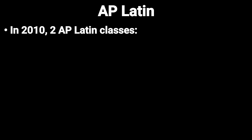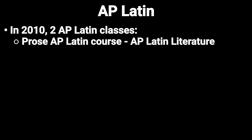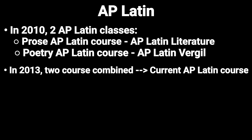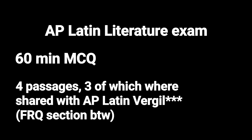Another discontinued course is AP Latin Classics. There were two courses: a prose course called AP Latin Literature, and a poetry course titled AP Latin Virgo. In 2013, the courses were combined and AP Latin students now study both poetry and prose during a single school year. The AP Latin Literature exam began with a 60-minute MCQ section. Students were given four passages, three of which were shared with the AP Latin Virgo exam, and one was a passage students should have already studied — similar to how Calc AB and BC share some FRQs today.